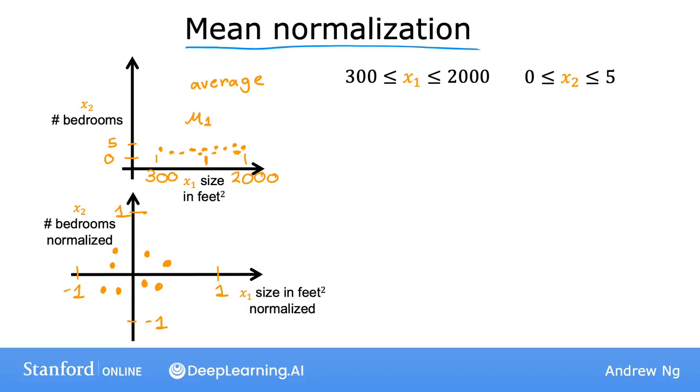You may find that the average of feature 1, mu1, is 600 square feet. So let's take each x1, subtract the mean mu1, and then divide by the difference 2000 minus 300, where 2000 is the maximum and 300 the minimum. And if you do this, you get the normalized x1 to range from negative 0.18 to 0.82.